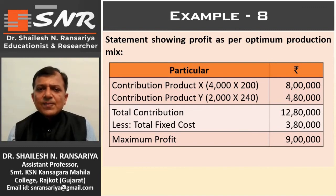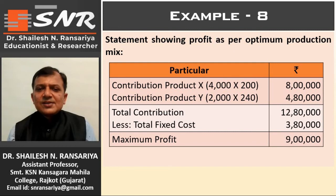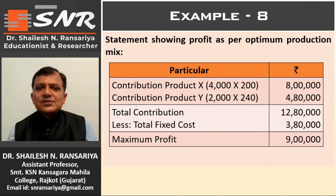As per the optimum production mix, the company can get a maximum profit of rupees 9 lakhs. This is the example of key factor — when material is the key factor or direct labor is the key factor. Thank you very much for watching this video. Take care, see you again in the next video.